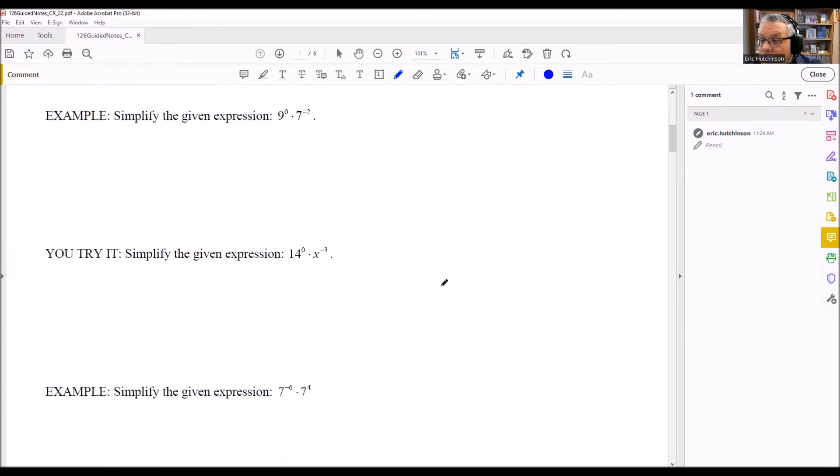This next one, we have 9 to the 0. Anything raised to the power of 0 is 1, so we have a 1 out front. We can change this one into a positive exponent: 1 over 7 to the positive 2. We can evaluate that—1 times anything is itself, so we have 1 over 49. That would be the answer.